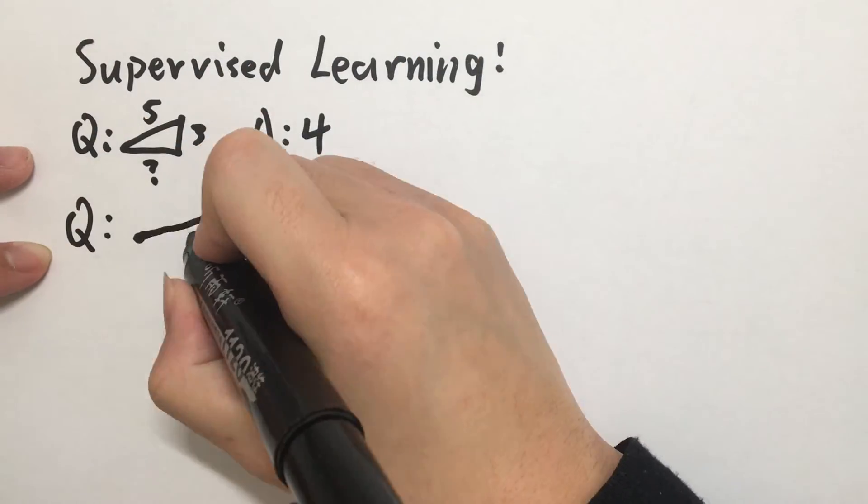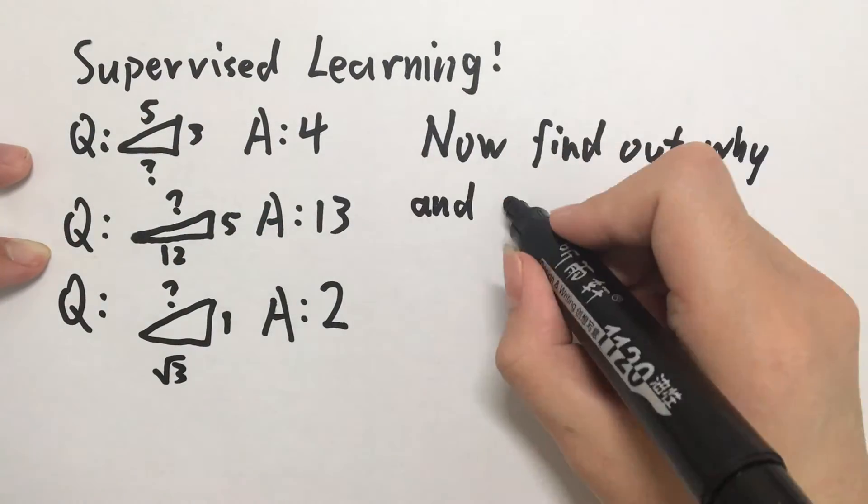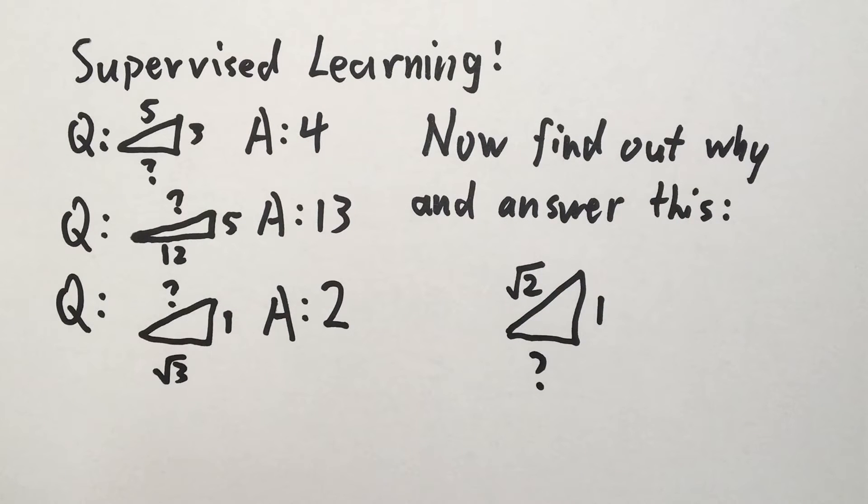Supervised learning: To train a student to do math, you give them a lot of questions and their best possible answers, but no answer explanations. The student needs to work out how the answers were gotten and be able to do other problems in the future.